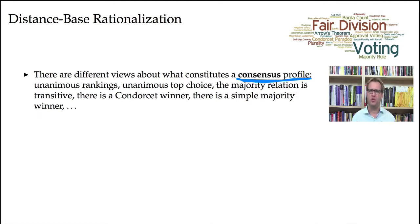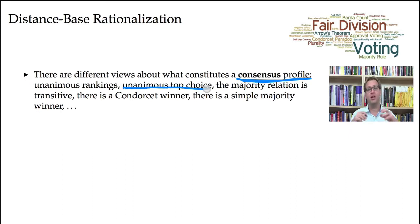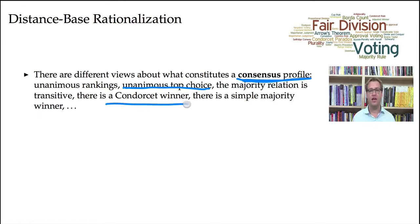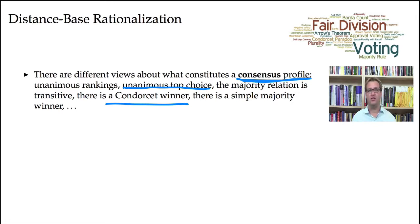That seems too strong — it's too hard to achieve consensus in that sense. Maybe we want something weaker, such as unanimous top choice, so everybody agrees on who should be ranked first. Perhaps you think that's a bit too strong as well, and so you can weaken it further and say it's a consensus profile if the majority relation is transitive, or if a Condorcet winner exists, or if a simple majority for a candidate exists. All of these can serve as a definition for what it means to say there's consensus in the profile.